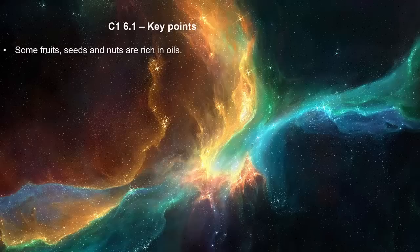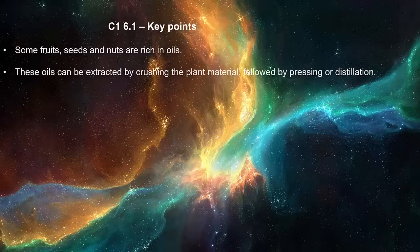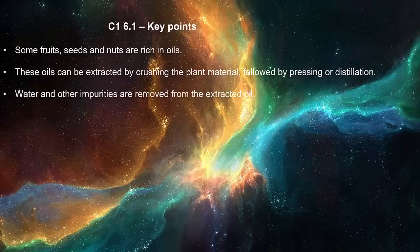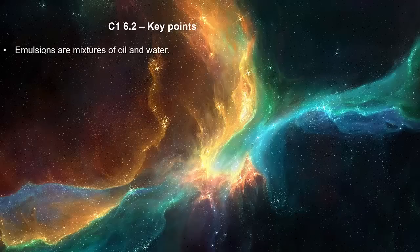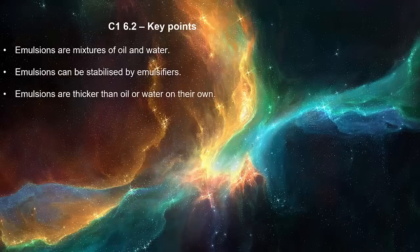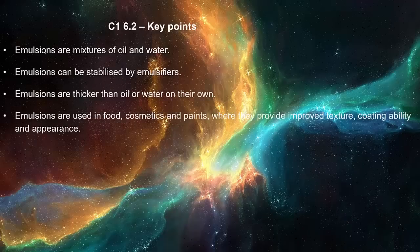Some fruits, seeds and nuts are rich in oils. These oils can be extracted by crushing the plant material, followed by pressing or distillation. Water and other impurities are removed from the extracted oil. Vegetable oils can be used as fuels such as biodiesel. Emulsions are mixtures of oil and water, and can be stabilized by emulsifiers. Emulsions are thicker than oil or water on their own, and are used in food, cosmetics and paints, where they provide improved texture, coating ability and appearance.